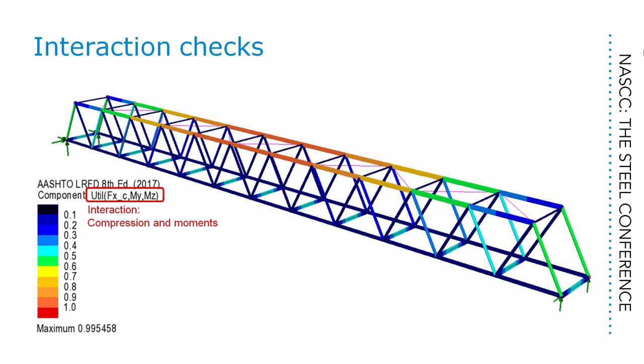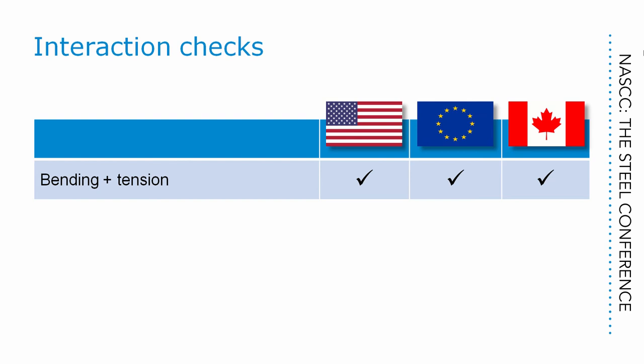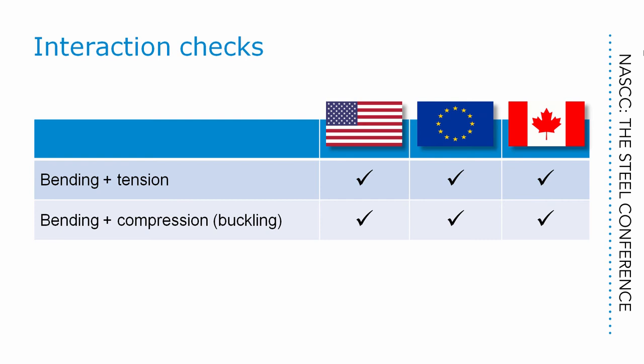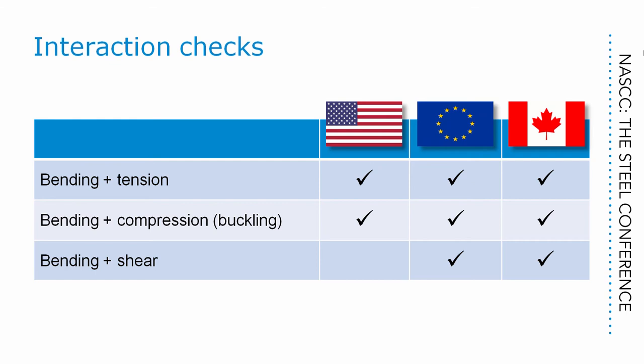The final utilizations that really matter aren't the basic checks on tension, compression, flexure, and shear — it's the interaction checks where these quantities can all be brought together. For bending and tension, all the codes in this study have a check, although the Canadian one doesn't account for biaxial bending. The Eurocode uses a bending resistance reduced in consideration of the tension stress. For bending and compression buckling, again all three codes offer a check. For bending and shear, the Eurocode and Canadian code both have an interaction check — the Eurocode uses a bending resistance where the web strength is reduced in respect of the shear it's carrying. AASHTO has no corresponding check.